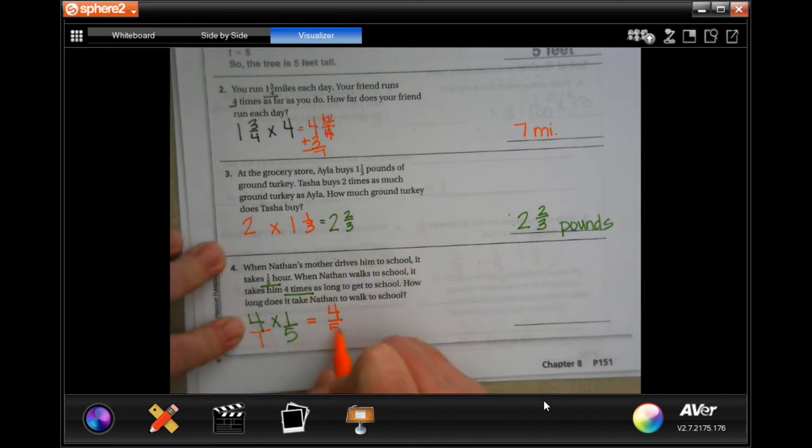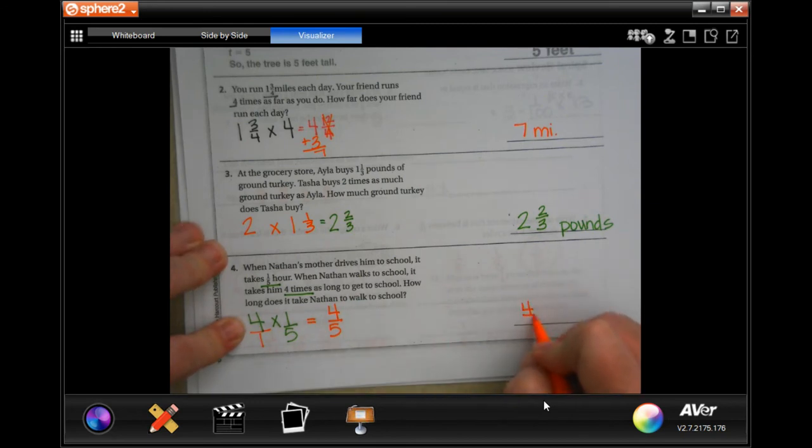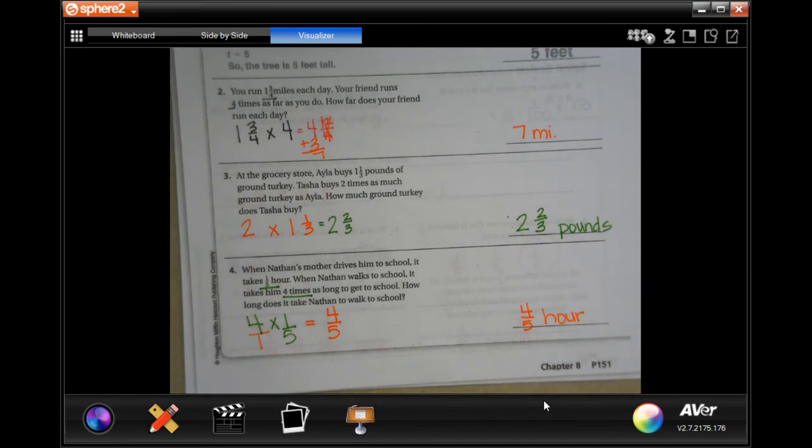So, four times one is four, and then one times five is five. So, four-fifths, and it's being measured in hours. So, four-fifths of an hour.